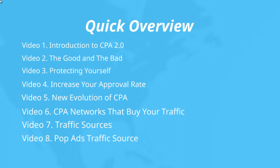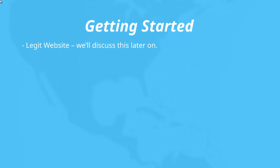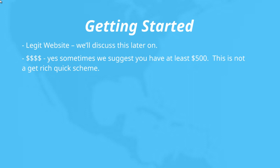With that said, let's talk about what you need to get started. You're going to need a legitimate website — one that shows people you're a real company. Even if you're a one-man operation, a professional-looking website will make you look like an agency. We'll discuss in detail why you need that and how it helps bypass most of the approval process. You're also going to need money — we suggest having at least five hundred dollars. This is not a get-rich-quick scheme. If you're thinking you can do this for free with SEO, that's possible, but SEO can take months to get started. We're talking about paid traffic here, so you're going to need money.